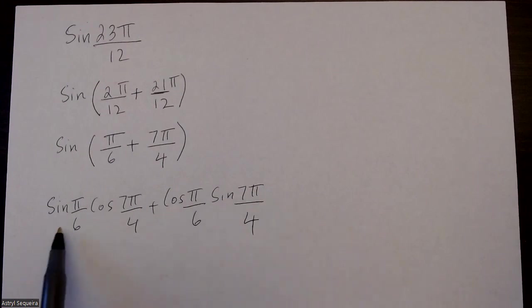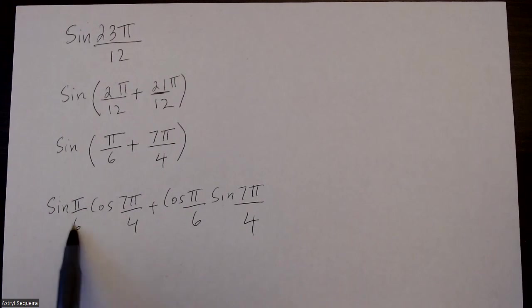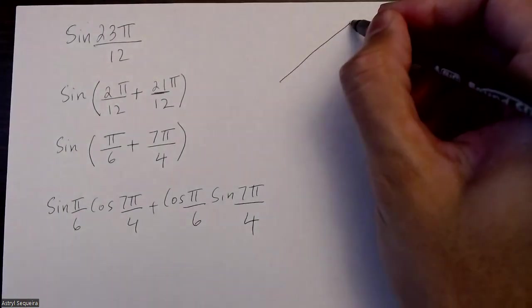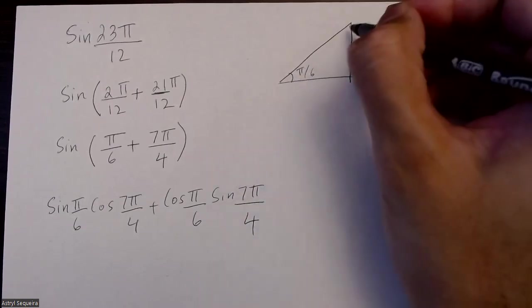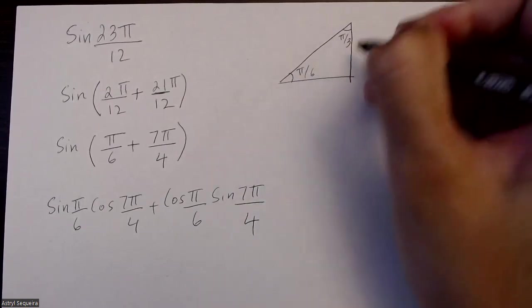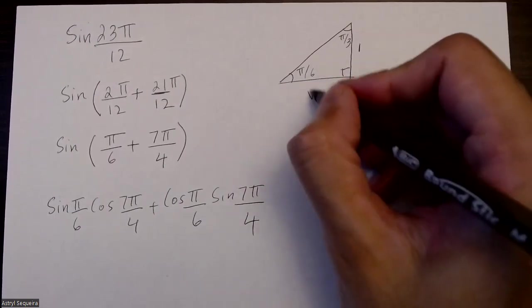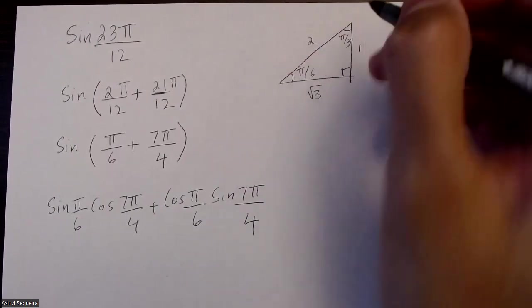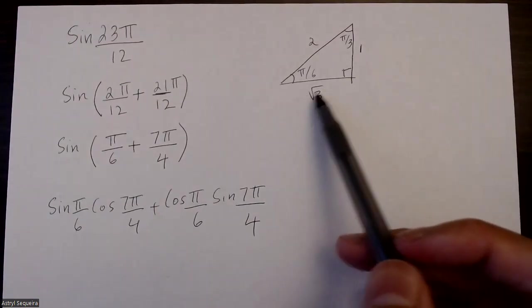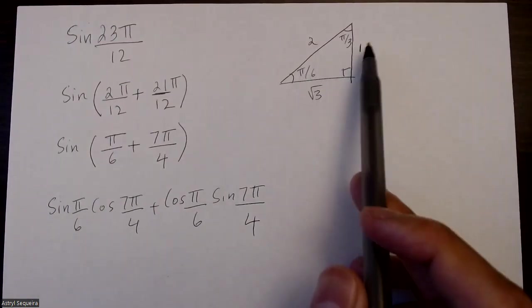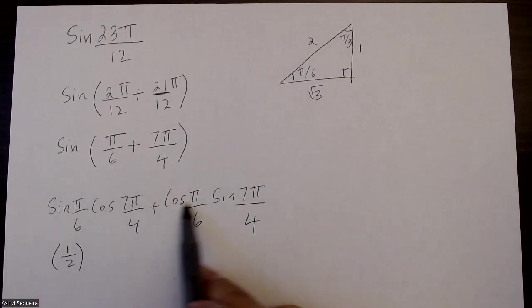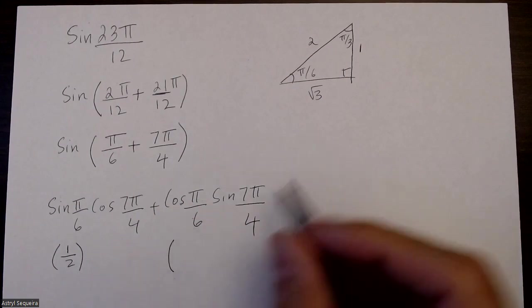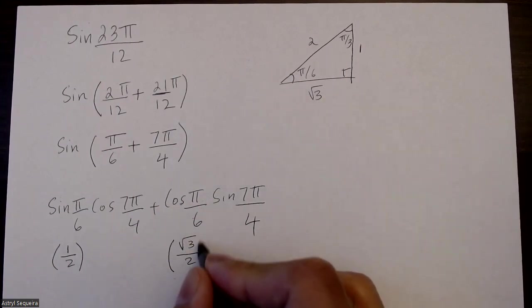Now you simply just use your special triangles to get these exact values. So sine π over 6, that's just my regular special triangle, it's in quadrant number 1. This is π over 6, π over 3, with sides 1, root 3, and 2. This is quadrant 1, so it's all positive. So sine of π over 6 is going to be 1 over 2, and cos of π over 6 is just going to be root 3 over 2.